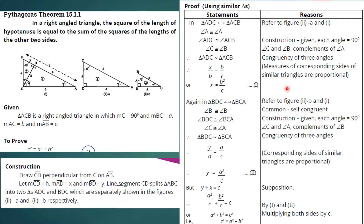Therefore, y over a is equal to a over c, because corresponding sides of similar triangles are proportional. Solving for y, we multiply both sides to get y is equal to a squared over c.